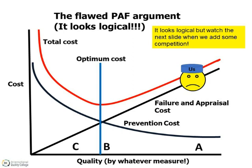Many viewers will be familiar with this graph, sometimes shown as its mirror image. The theory underlying this set of curves is intended to convey the impression that there is an optimum level of quality cost, which therefore becomes the desirable target. The curve suggests that if a producer is at position A, then the total cost will be high due to excessive failure and appraisal costs. It is then suggested that costs will fall as more attention is given to prevention costs. This is correct.